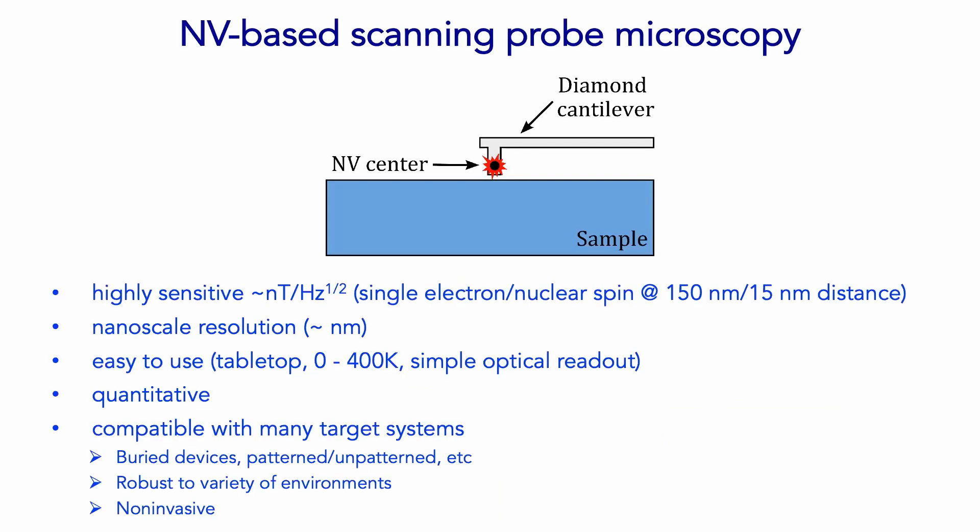One can engineer an NV center to reside at the very apex of a scanning probe tip. Since we can address single NV centers, we can take that single NV center and scan it over some sample and image the magnetic textures and structure of current flow in that sample by monitoring the fluorescence out of the NV center.